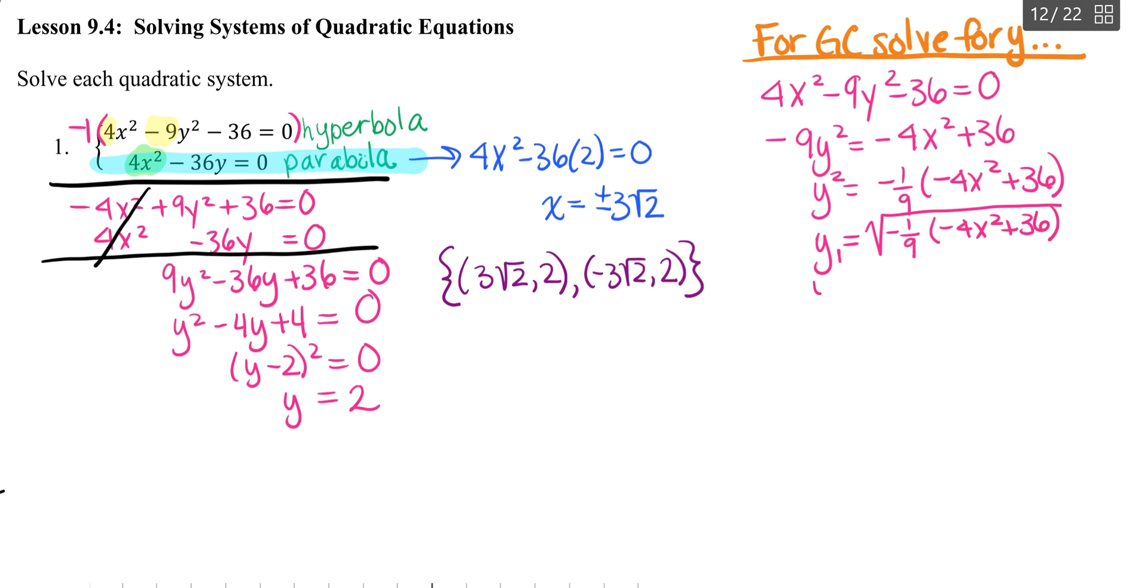And then I'm going to put my y2 as negative the square root of negative 1 ninth times the quantity of negative 4x squared plus 36.